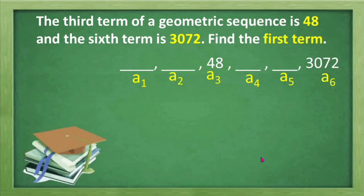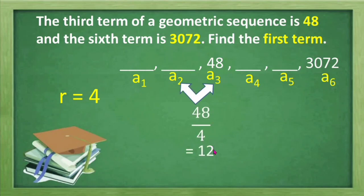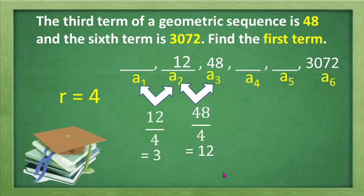We can also find the first term by dividing the third term by the common ratio of 4, giving 12 for the second term. Then dividing 12 by 4 gives 3. So we still arrive at the same result — the first term is 3.